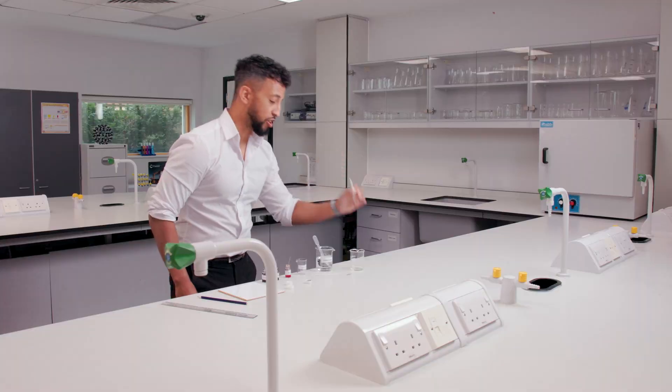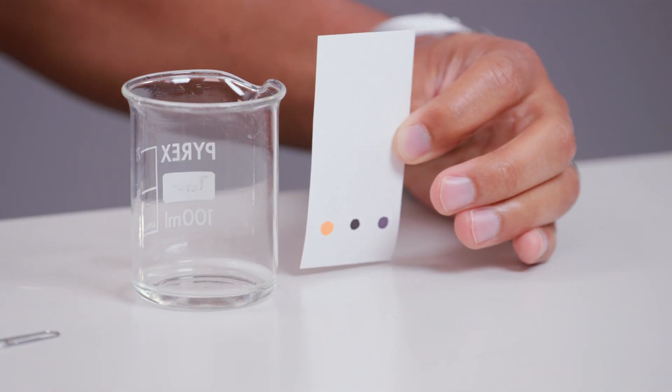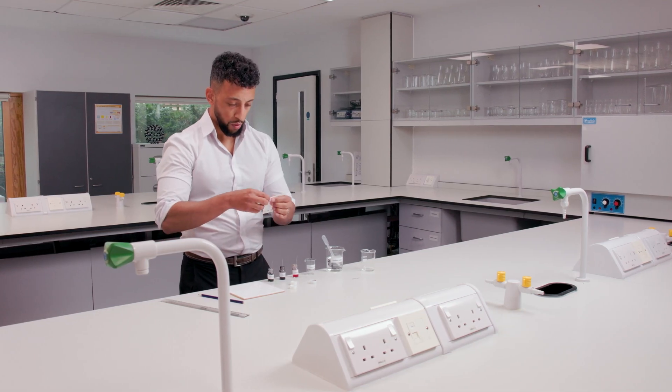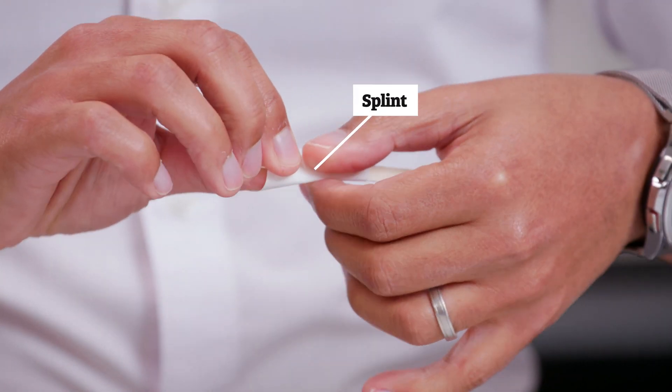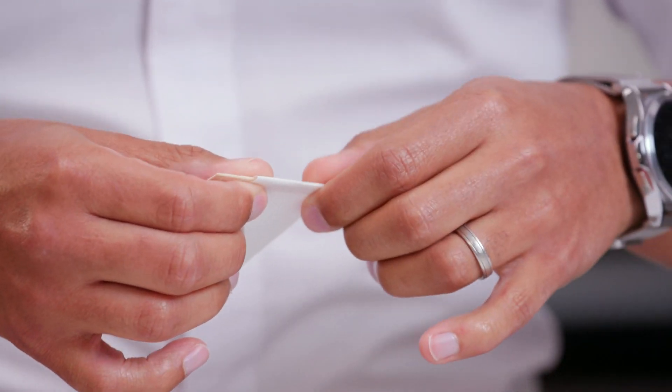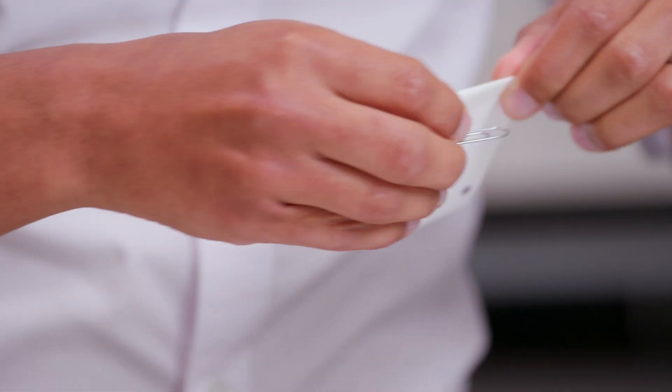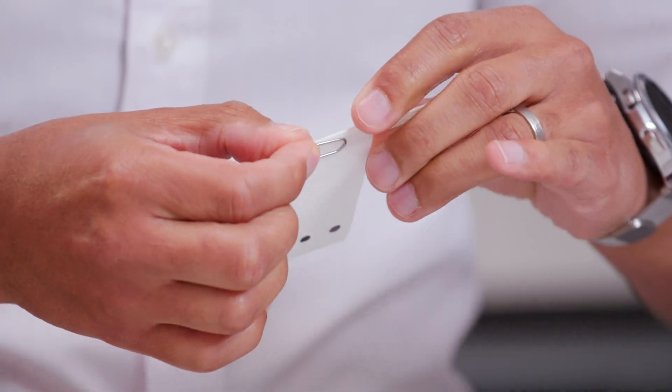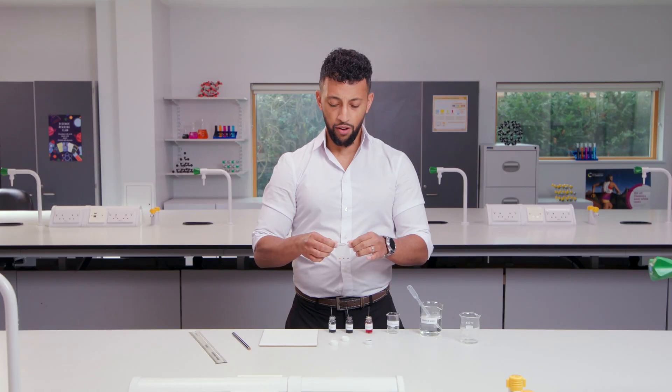I'm going to line up the paper outside the beaker so I can measure how long it needs to be. Keep the paper in place by wrapping it around a splint and securing it with a paper clip. Like this.